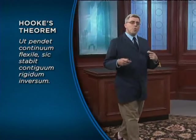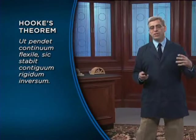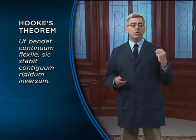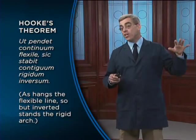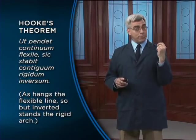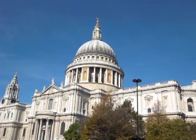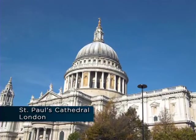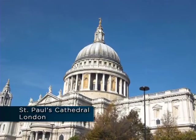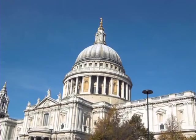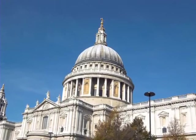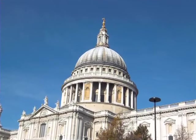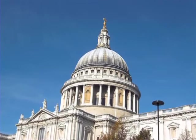Hooke's theorem, written originally in Latin, is almost poetic: "ut pendet continuum flexile sic stabit contiguum rigidum inversum" — as hangs the flexible line, so but inverted stands the rigid arch. At the time, Hooke was working with Christopher Wren on the design of St. Paul's Cathedral in London, and on Hooke's advice Wren incorporated this principle into his ingenious design of the great dome. There is a parabola hiding deep inside — we'll examine this structure in lecture 21.